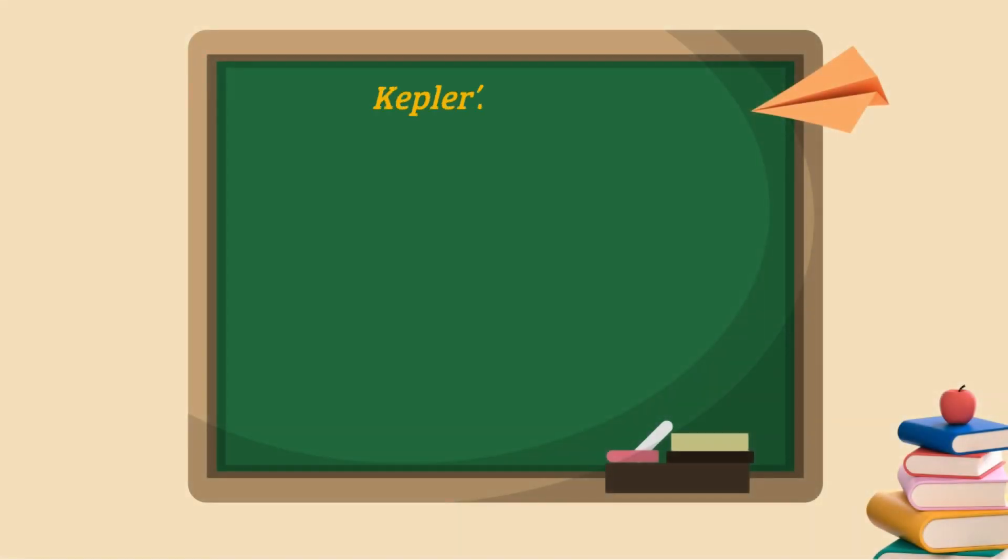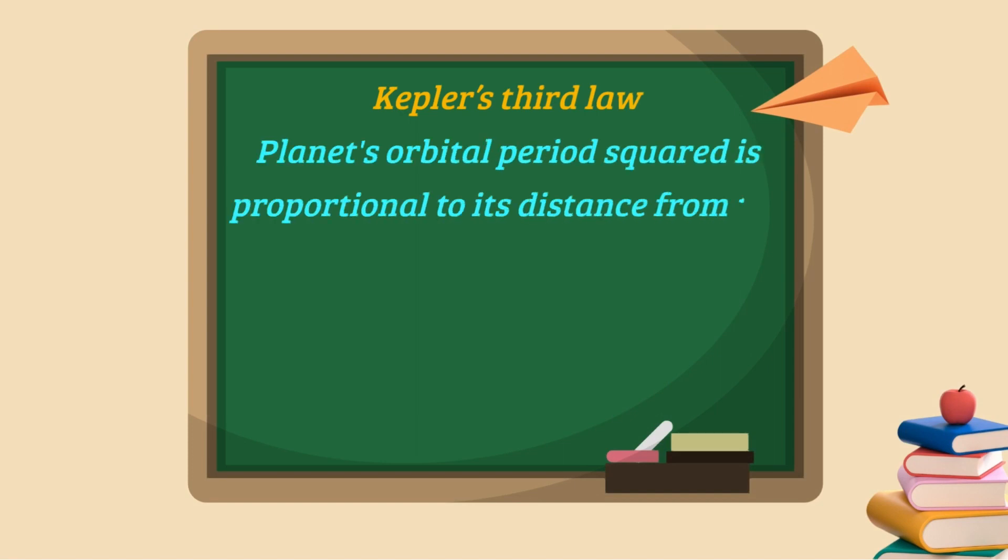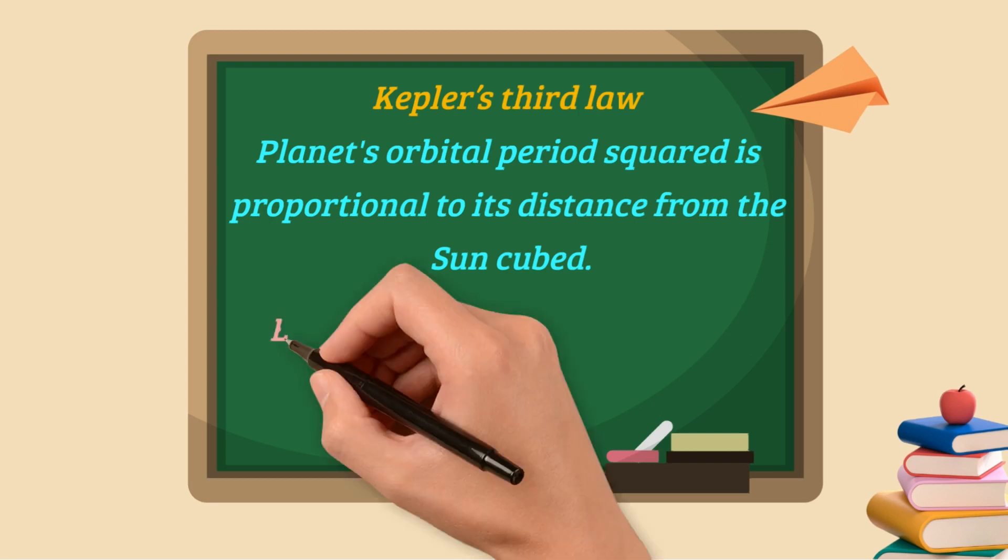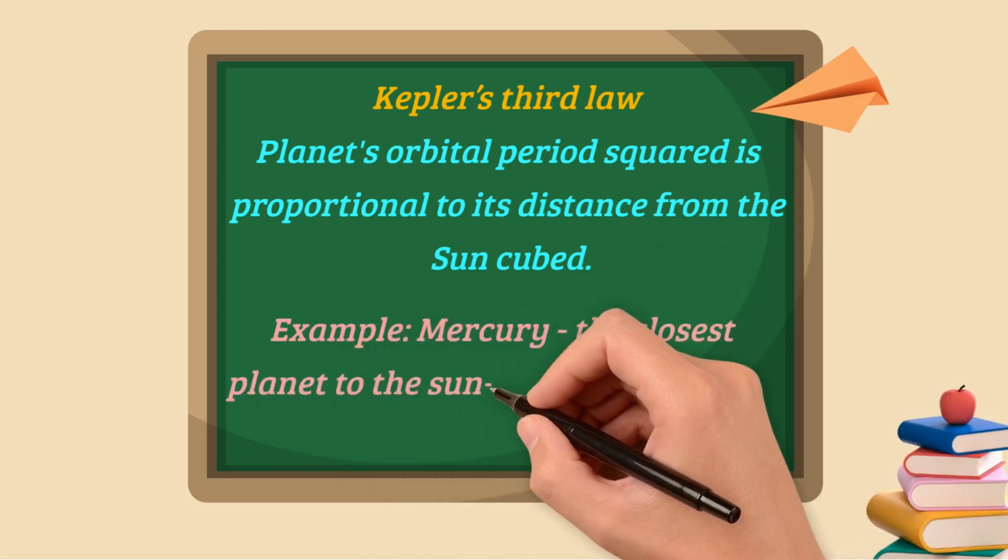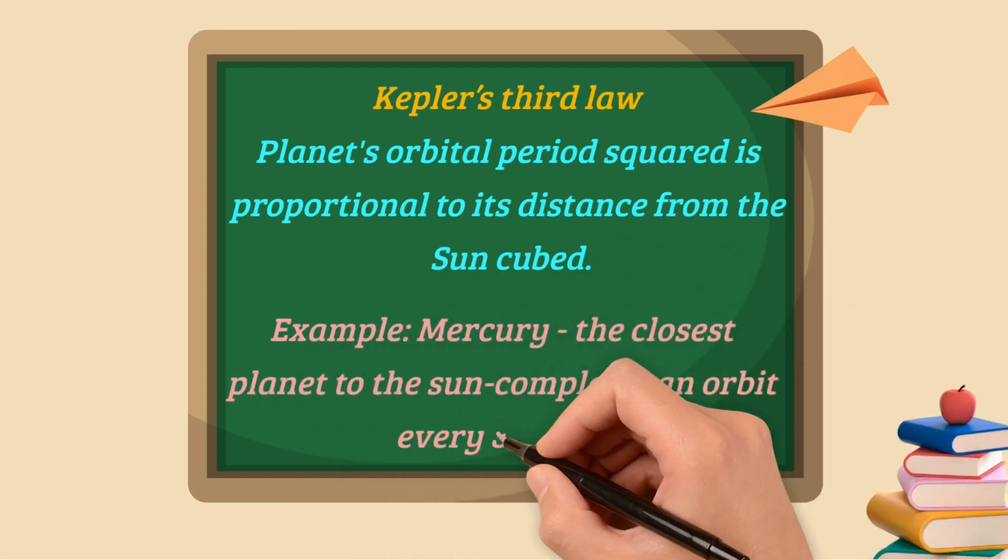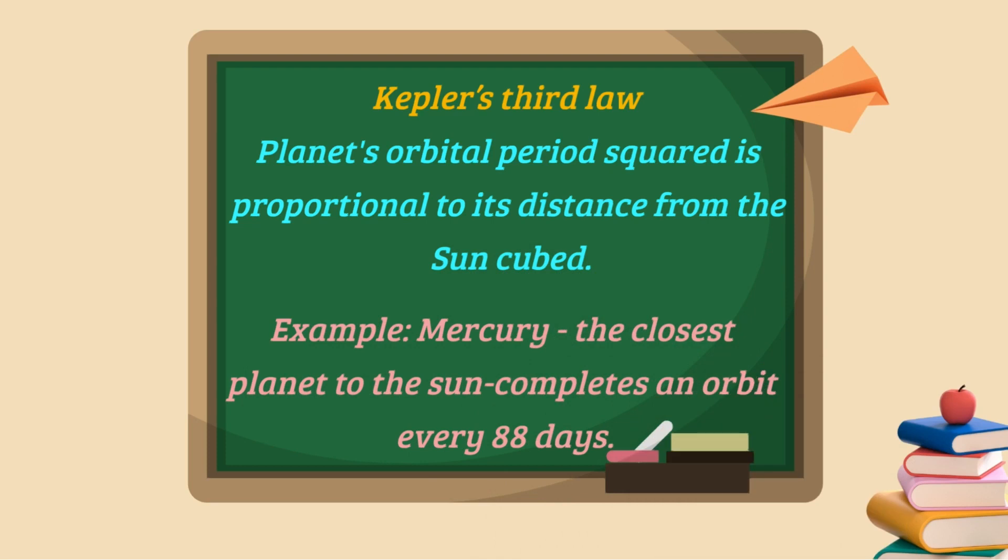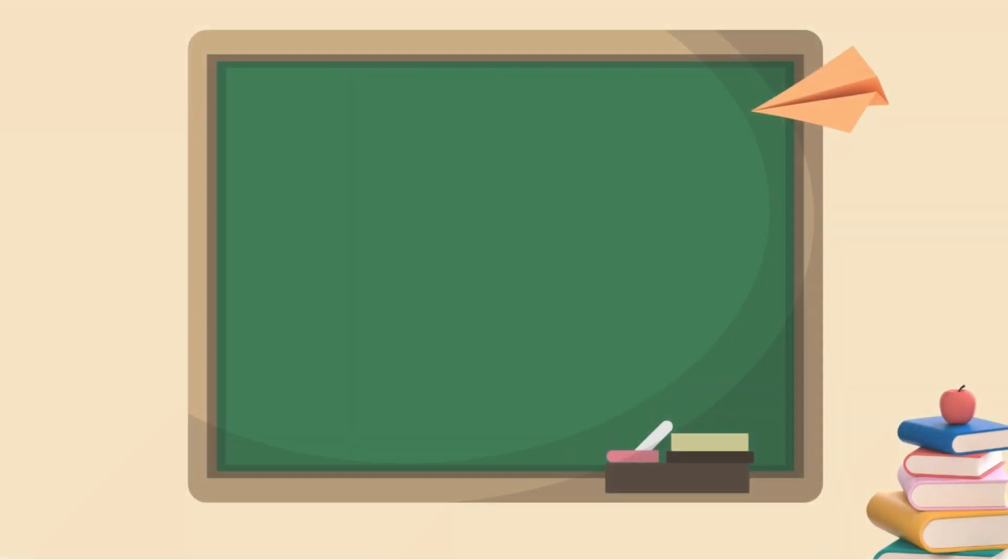Now let us move towards Kepler's third law in which he says the planet's orbital period squared is proportional to its distance from the sun cubed. For example, let us talk about Mercury, the closest planet to the sun, which completes an orbit every 88 days. So it takes 88 days for Mercury to complete one revolution around the sun.